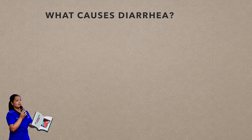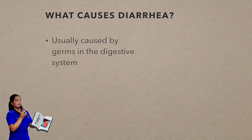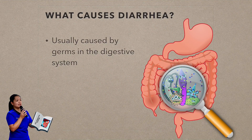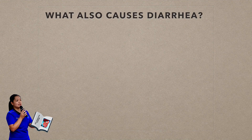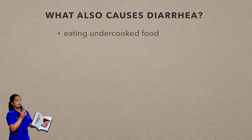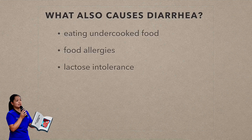Diarrhea is usually caused by germs in the digestive system, and these germs can be a virus, a bacteria, or a parasite. Other causes of diarrhea include eating undercooked food, food allergies, and lactose intolerance — this is when a person has symptoms due to a decreased ability to digest lactose, which is a sugar found in dairy products.